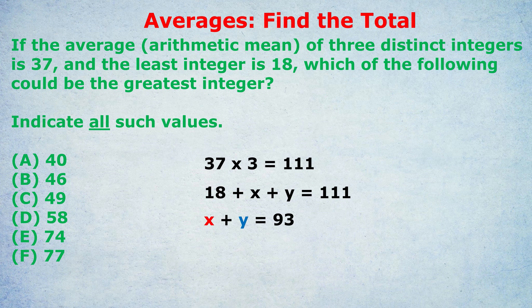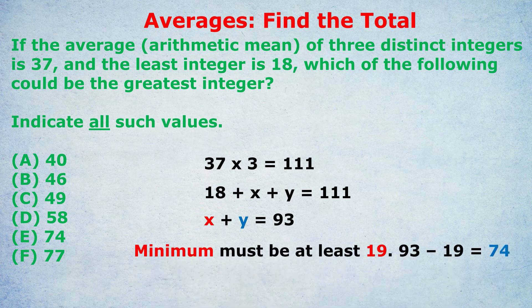If x is that middle term, let's pick some extreme values. The smallest we can make x is not 18, because did you notice the word distinct in the question? That means each number has to be different. So we can't make it 18, but we can make it 19. If x was 19, then we could subtract 19 from both sides and get 74. So the minimum for x would be 19, making the maximum for y 74. So we know 74 is possible and we can eliminate 77. So that's the upper limit for y.